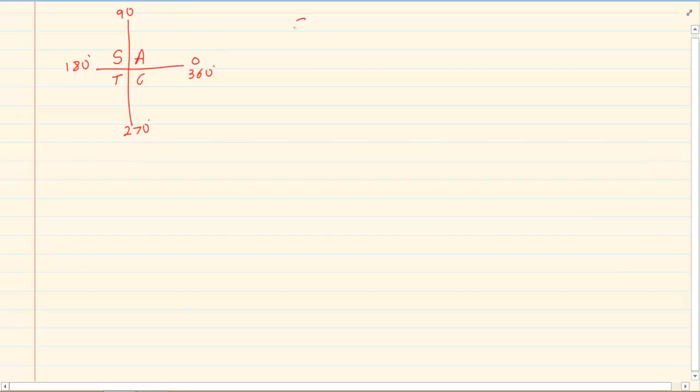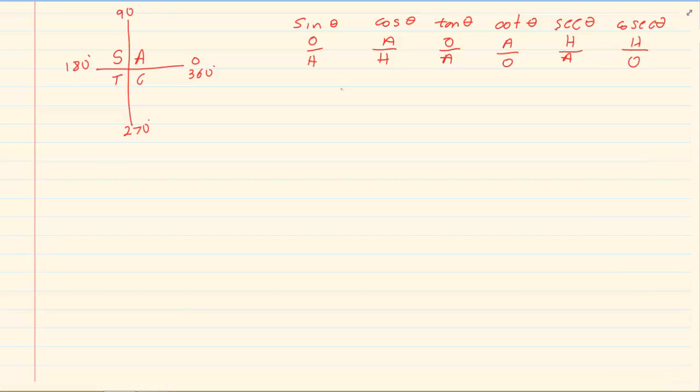Our basic ratios is sin, cos and tan and then cot, sec and cosec. Oranges, apples, oranges, apples, hearts, hearts. That way we can remember what each ratio stands for. So sin theta is opposite over hypotenuse and so forth.